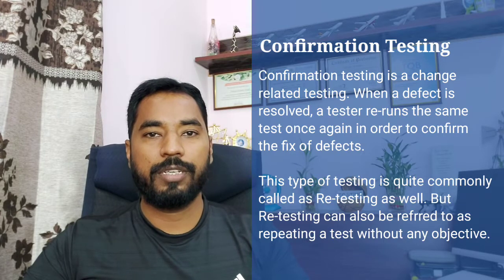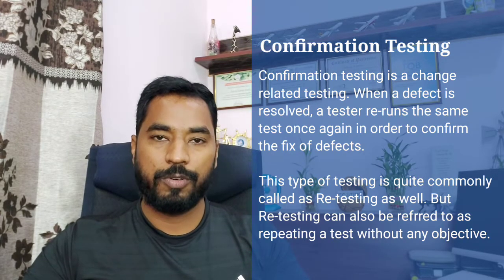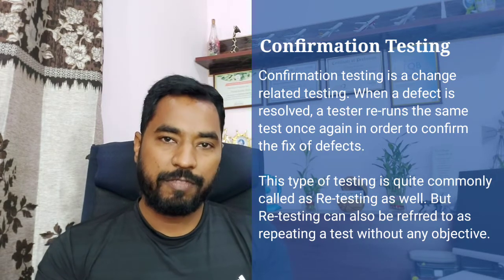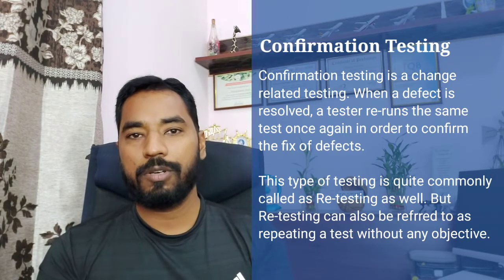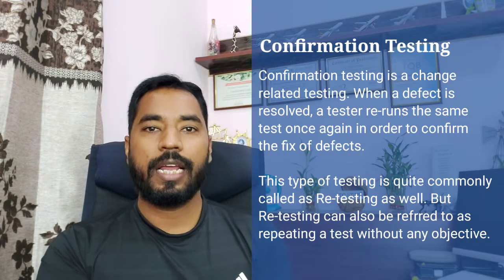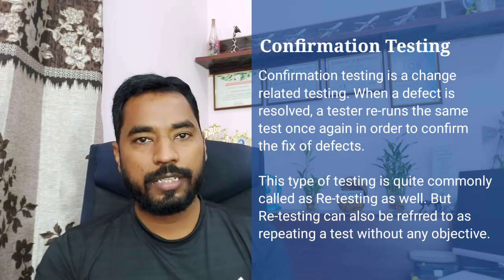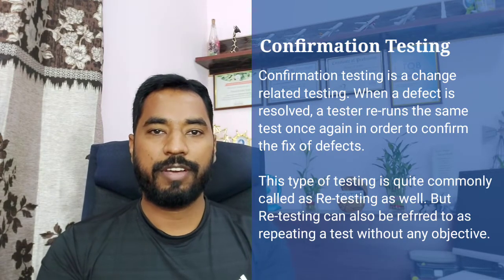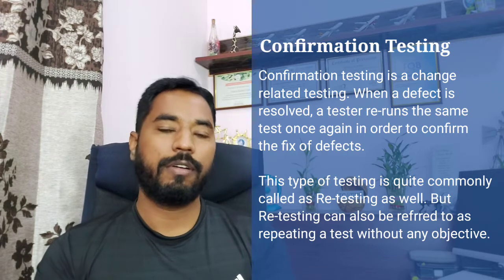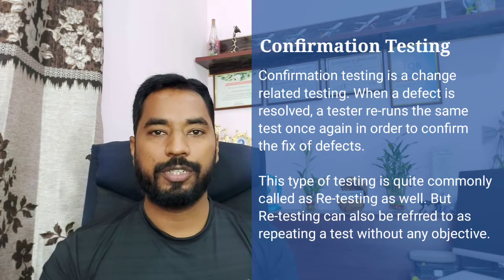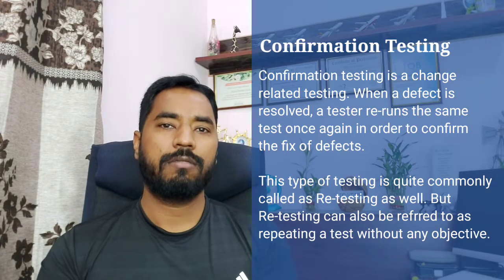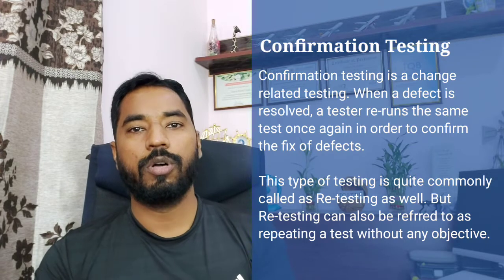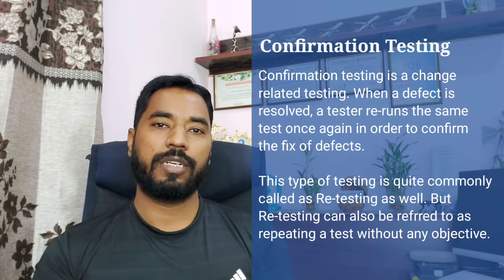Confirmation testing, put together, is a type of testing where you re-run a particular test which failed initially, and after the developer has fixed the issue, you re-run the same test to make sure the defect has been resolved and no longer exists. Some organizations call it retesting; others call it confirmation testing.